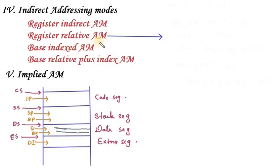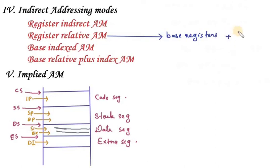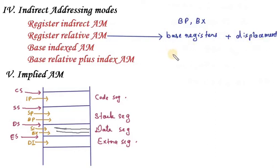Next comes Register Relative Addressing Mode. In this mode, the operand address is calculated using one of the base registers, specifically a base register plus a displacement value. The base registers we call BP or BX, and the displacement value is a constant. For example: MOV CL, [BX + 4], where BX is the base register and 4 is the displacement.